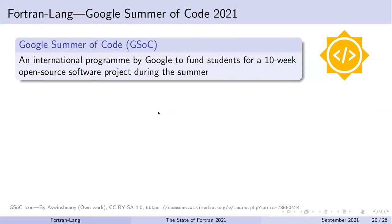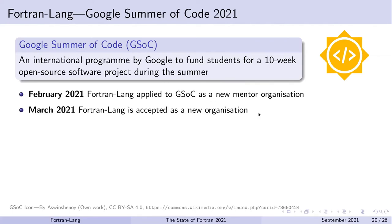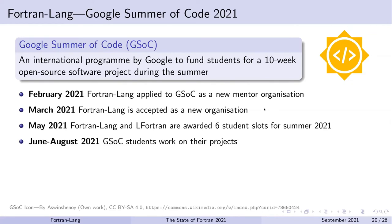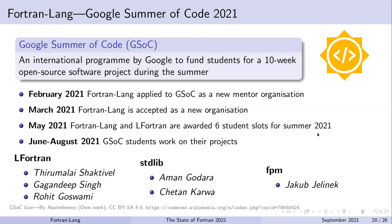This year, Fortran-lang applied to the Google Summer of Code program to be a mentor organization. Google Summer of Code is an international program by Google to fund students for a 10-week open-source software project during their summer break. We applied to be a new mentor organization, were accepted, and were awarded six student slots for this past summer. Over the summer, we had six students working across our projects: three students working with Andre on LFortran, two students working on the standard library, and one student working on the Fortran Package Manager.